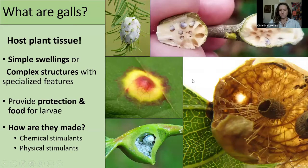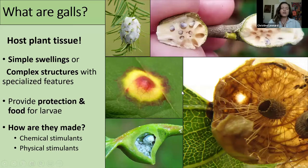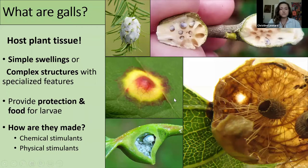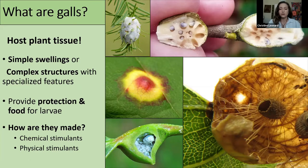Let's cover what a gall is. The basic answer is it's part of the plant, but the blueprints for the gall are actually given to the plant by a bug — also sometimes by fungus, but we'll cover bugs today. All galls are made of primarily host plant tissue. They can either be simple swellings of tissue or they can be complex structures with lots of specialized features. Their main function is to provide protection and food for the larvae developing inside.